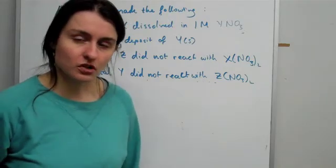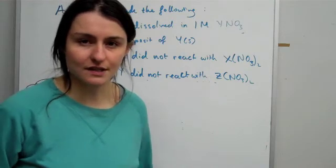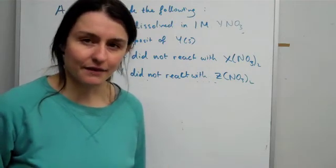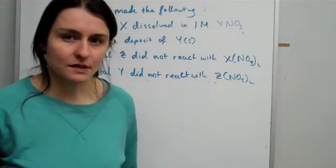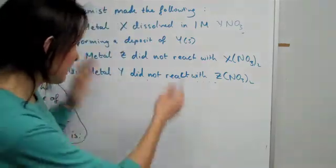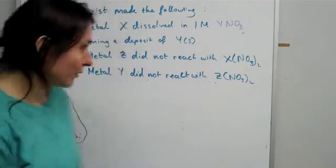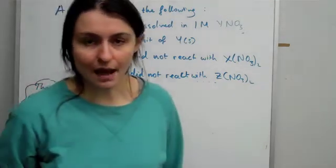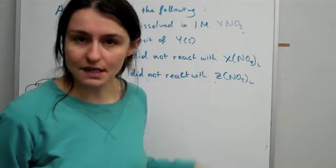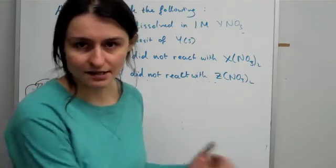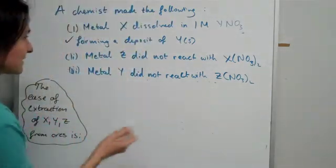Normally metals are trapped in ores, meaning they're trapped with oxygen and mixed together, and they're very hard to get in pure form. By their spontaneous reactions, you're able to extract them out. We're going to see, depending on the electrochemical series, which one's the easiest to extract as a solid and which one's the hardest. That's exactly what the question is asking us.